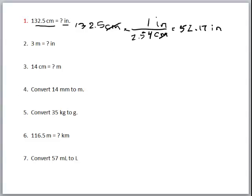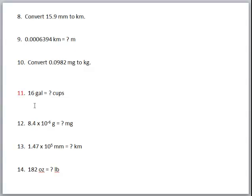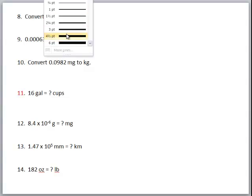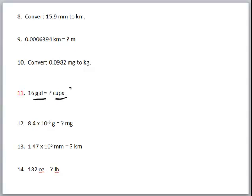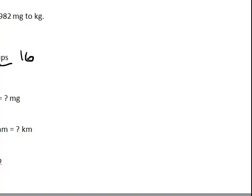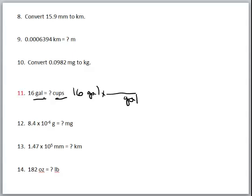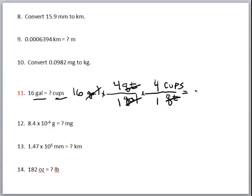Let's take a look at something that involves an English unit — converting between gallons and cups. You would be given the relationship between those. Starting with the given: 16 gallons. Gallons goes in the denominator. There's a conversion from gallons to quarts — four quarts in one gallon — so our gallons cancel. Then from quarts to cups: one quart contains four cups. Our quarts cancel, we've got cups, and when we do the math we get 256 cups.